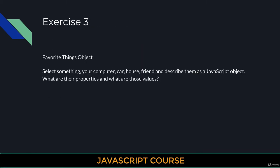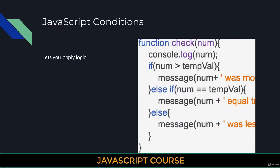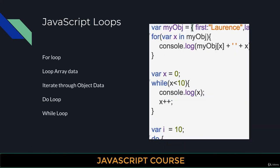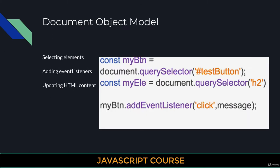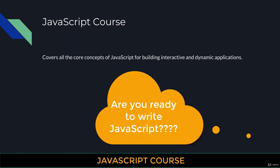We're looking at JavaScript objects, with exercises on objects as well as arrays — all the wonderful things you can do with arrays and the methods attached to them. JavaScript conditions, switch statements, loops, and of course the document object model, and how you can add event listeners, update and manipulate your HTML — all using JavaScript. This course covers all of the core concepts of JavaScript, including building interactive and dynamic applications. So let's dive right in and start creating some JavaScript code.